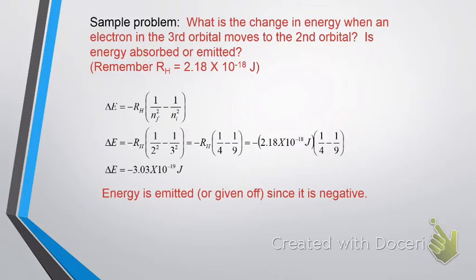So, when we plug and chug, we get delta E is equal to negative 2.18 times 10 to the minus 18 times 1 fourth minus 1 ninth. So, overall, delta E is negative 3.03 times 10 to the minus 19 joules. Since it's a negative sign, that means the system is giving off the energy.